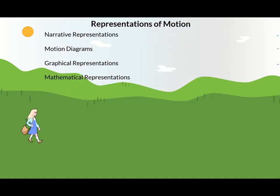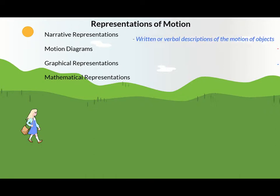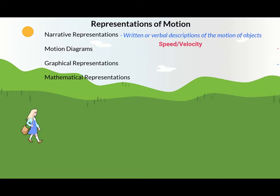These multiple representations of motion include narrative representation, motion diagrams, graphical representations, and mathematical representations. Narrative representations are written or verbal descriptions of the motion of objects. A complete narrative representation must include a description of the object's speed or velocity.